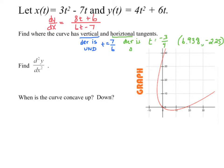If I plug in 7/6, I can figure out where the vertical tangent is. Plugging into x, I get negative 4.083, and plugging into y I get 12.444. If you go back 4 and up about 12 on the graph, that's where the vertical tangent is — it's where dx/dt equals 0. So if someone just asked for the vertical tangent, you only need to find where dx/dt is 0.